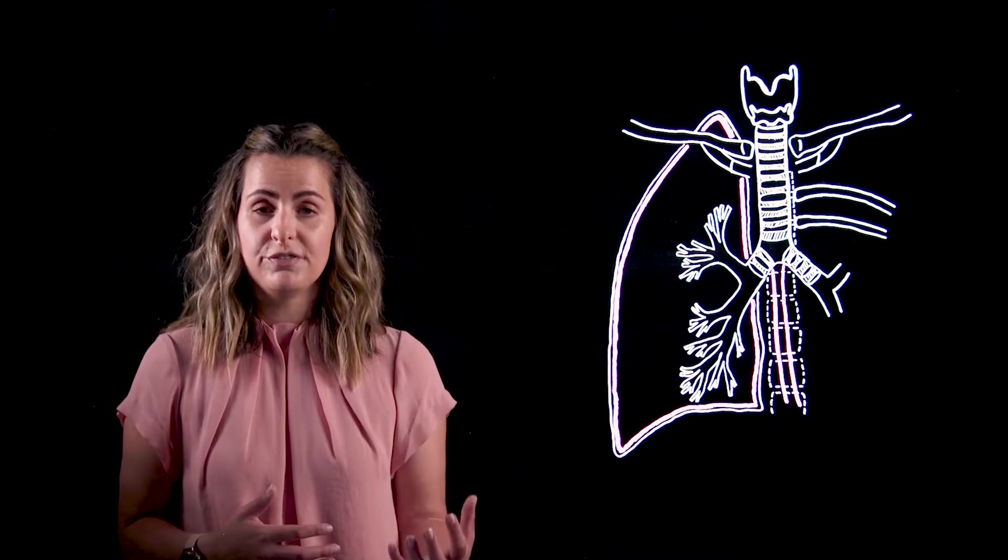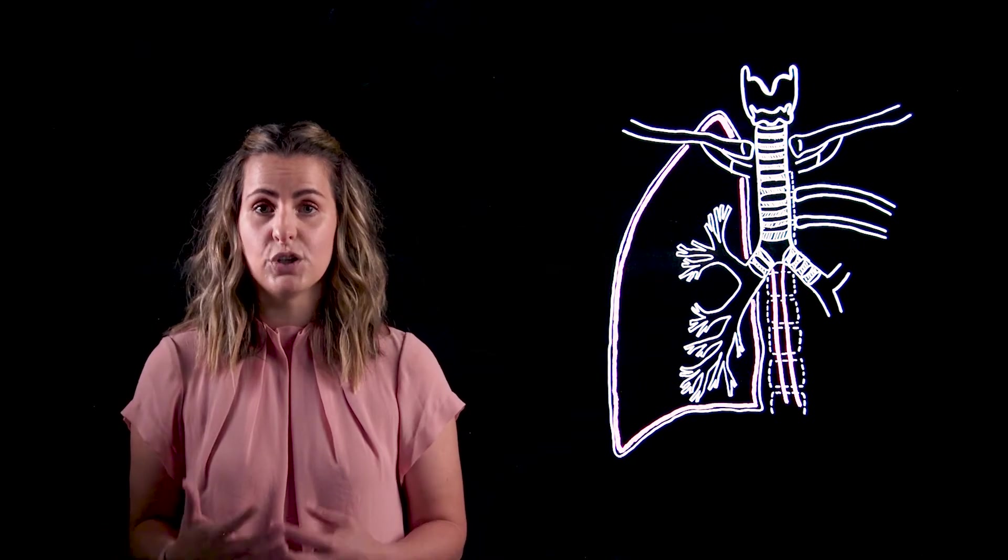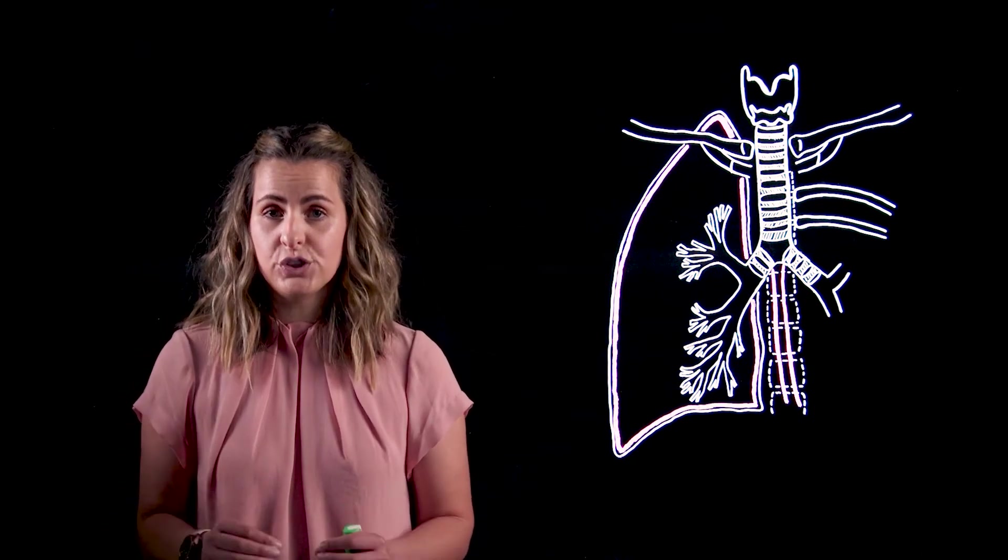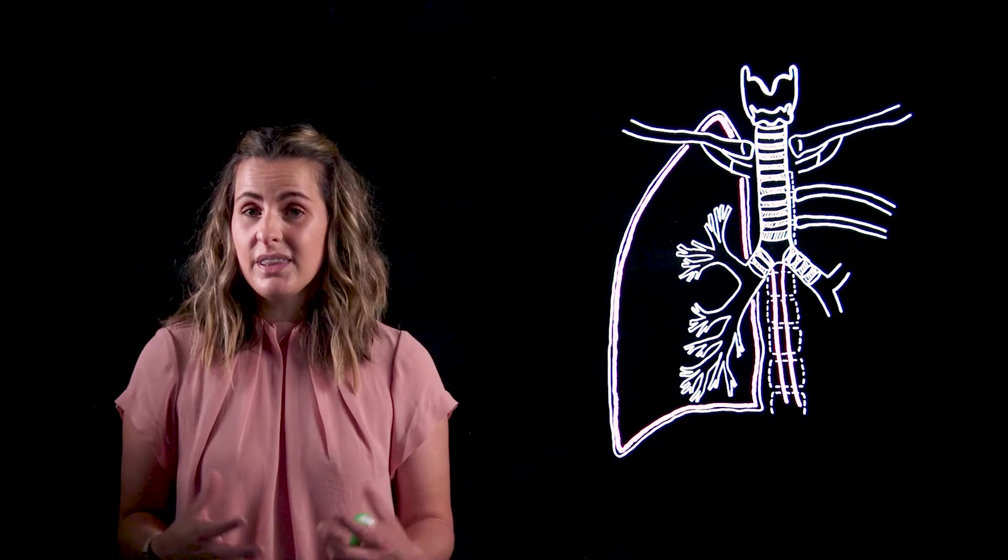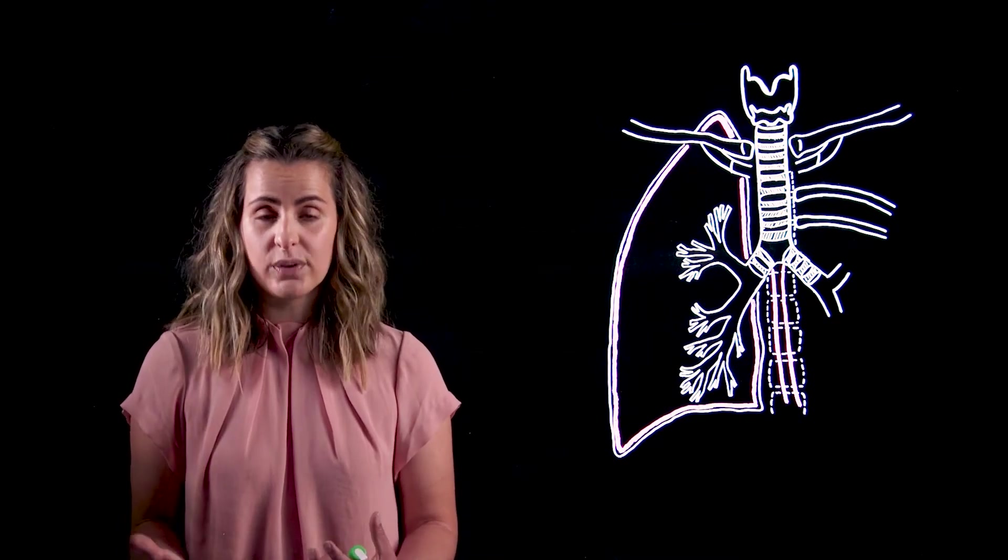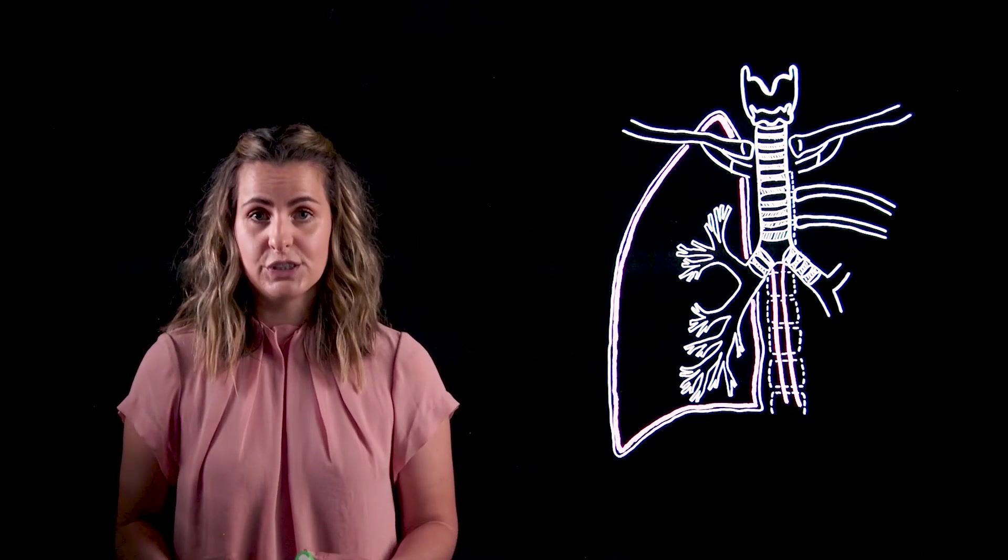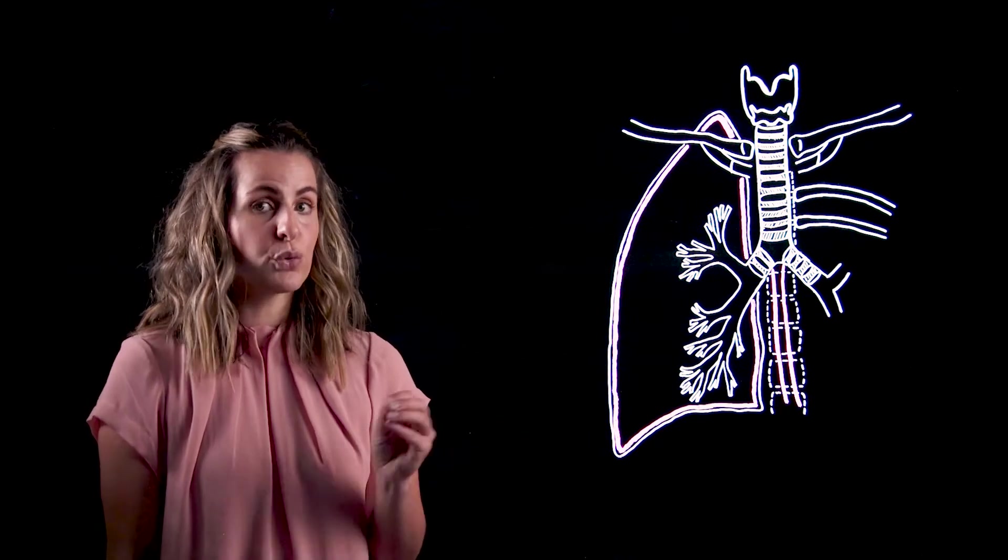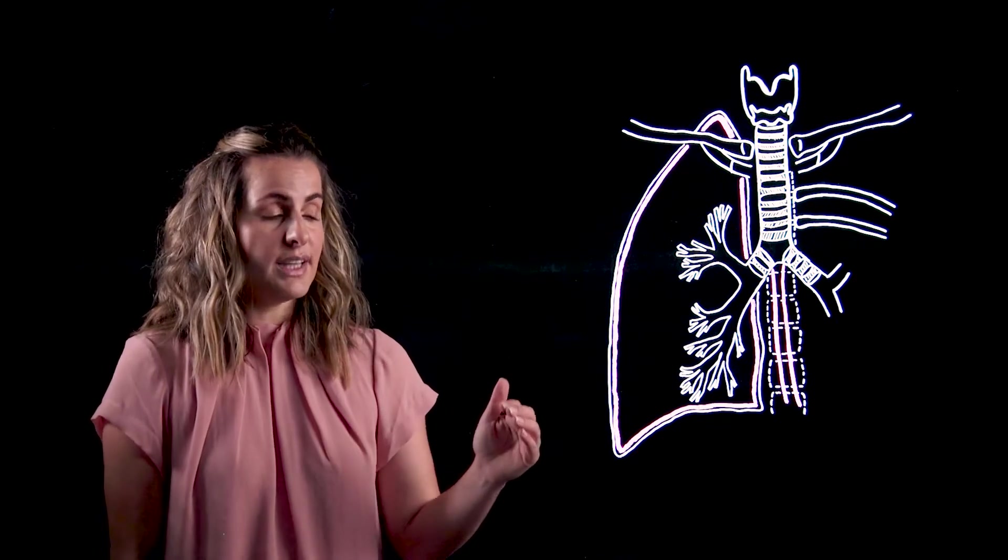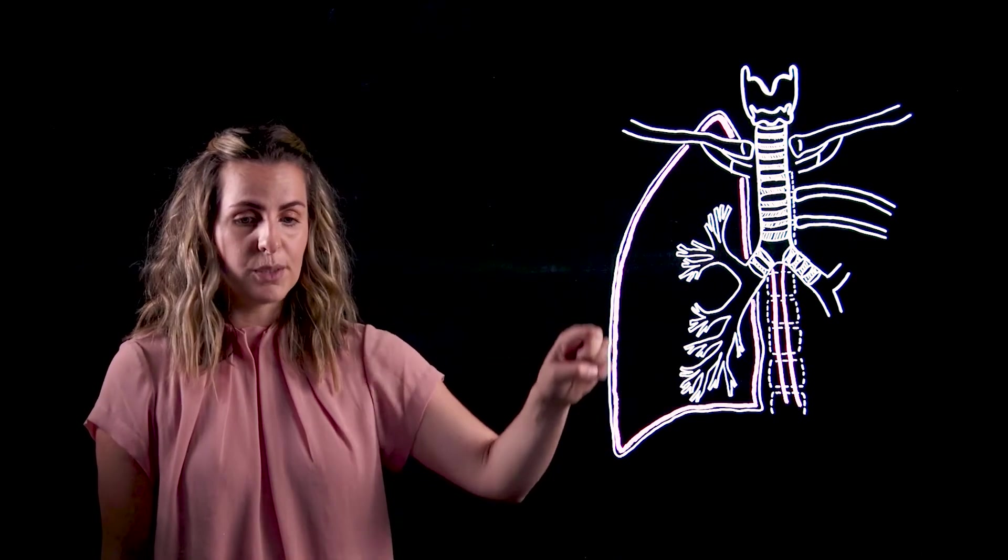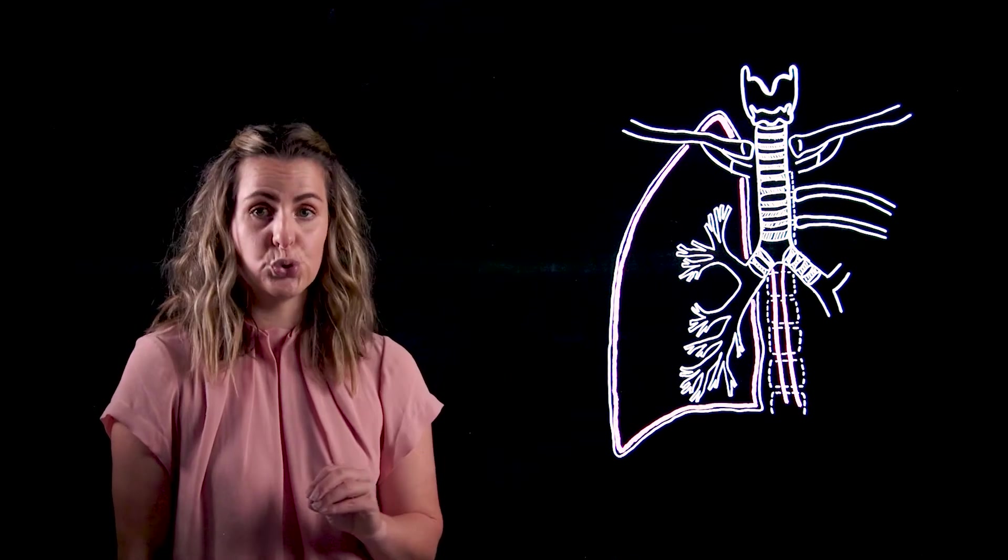These are called the superficial subpleural lymphatic plexus and the deep lymphatic plexus of the lungs. The vessels for the superficial subpleural plexus are located immediately deep to the visceral pleura. The visceral pleural layer is in direct contact with the lung parenchyma, so these vessels are located in that peripheral lung tissue. As you can see on our diagram, the parietal pleura is represented by the white outline of our lung. I've drawn immediately deep to that the outline of the lung parenchyma.